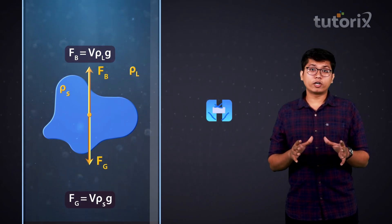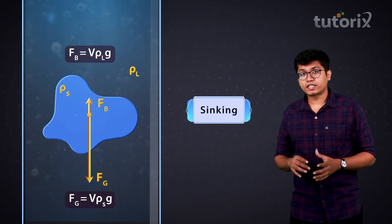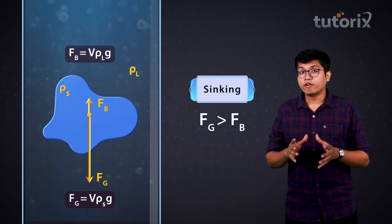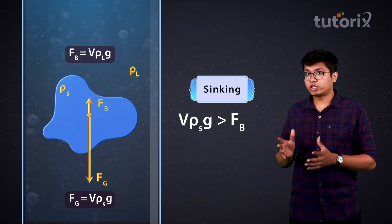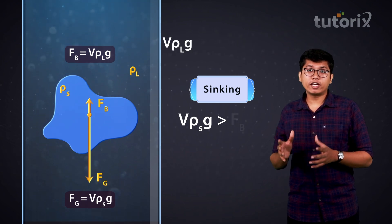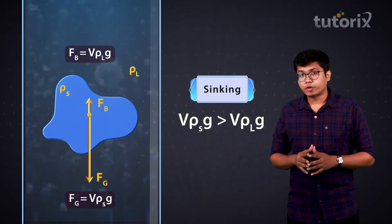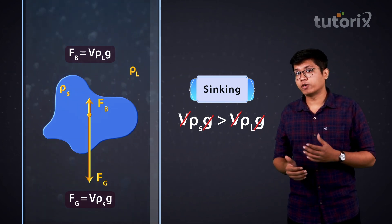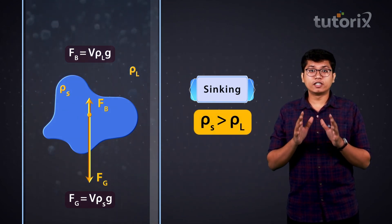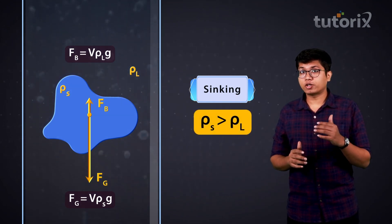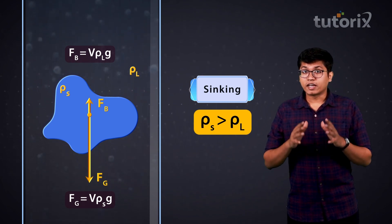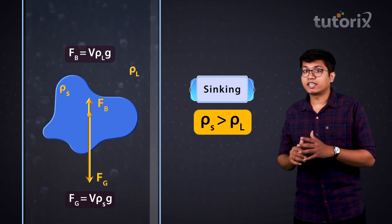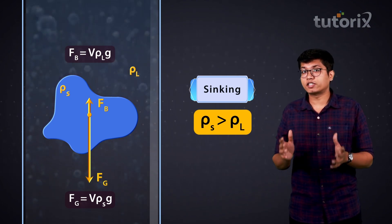Now if the body were to sink, the gravitational force should be stronger than the buoyant force, which means V × ρS × g should be greater than V × ρL × g. You can cancel out the common volumes and the acceleration due to gravity, and you would be left with the condition that ρS should be greater than ρL. This means the object would sink if its density is greater than the density of the surrounding fluid.